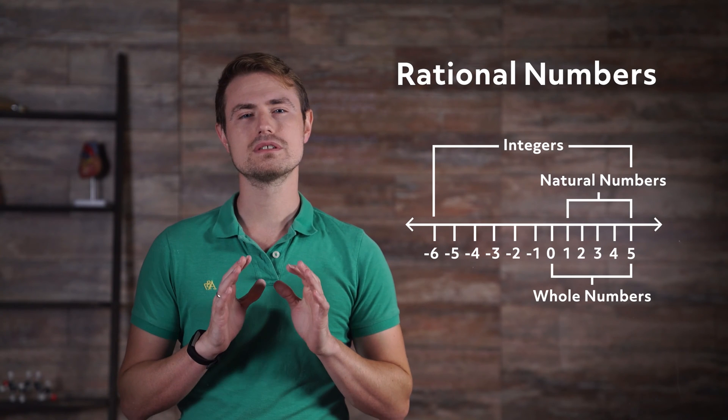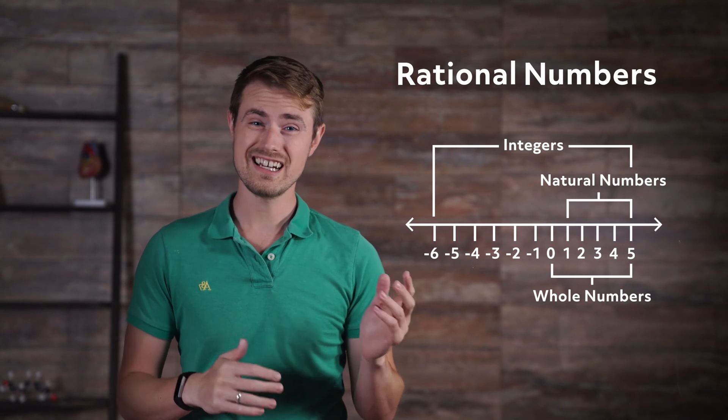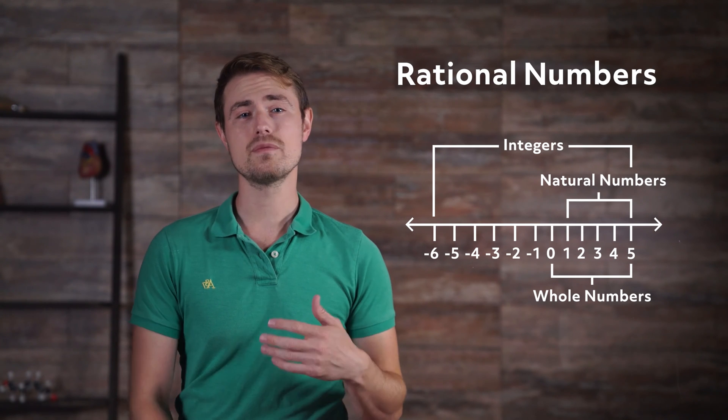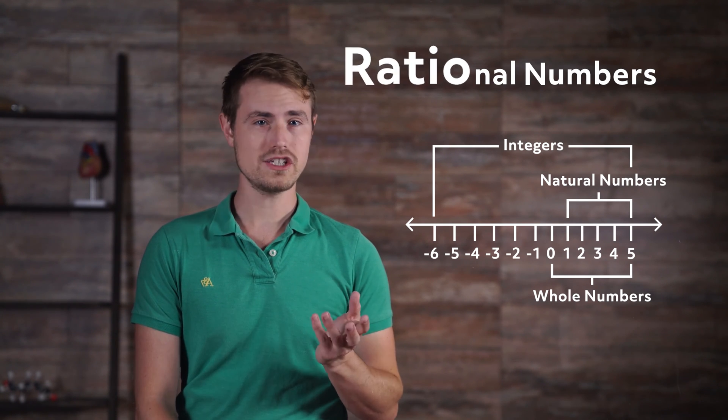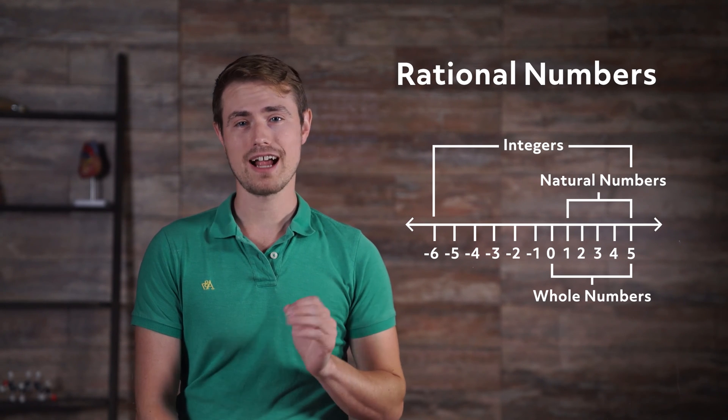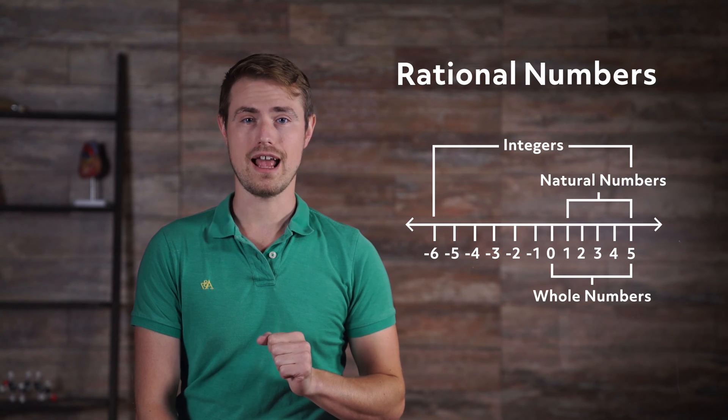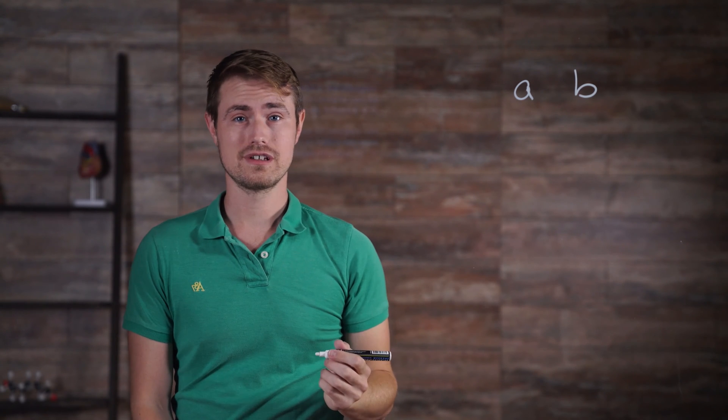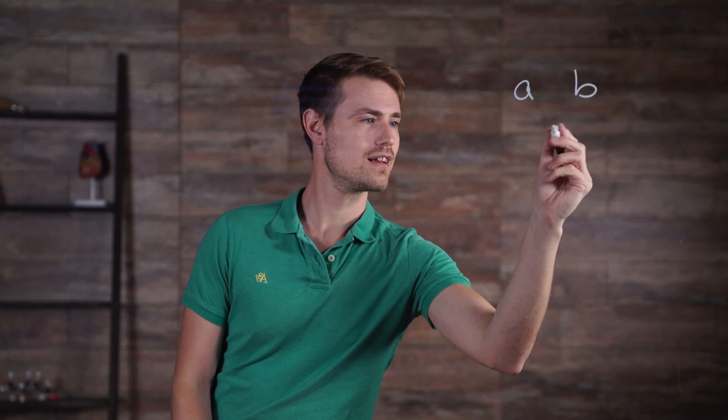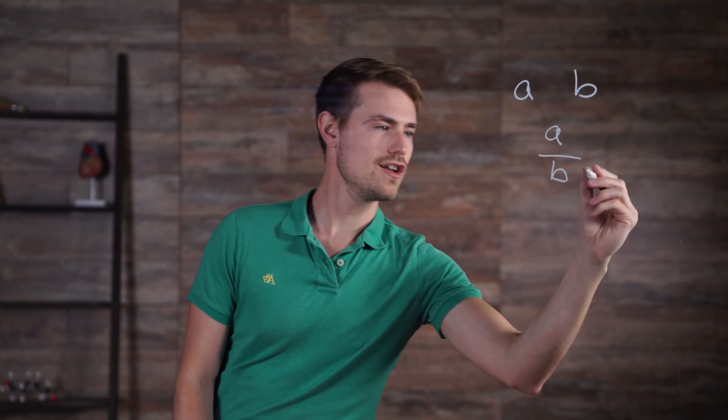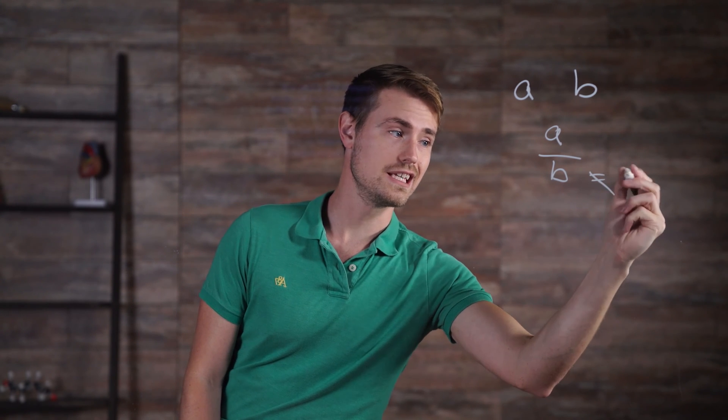Rational numbers include all the sets seen here in addition to the fractional values in between. An easy way to remember this is that the word ratio is in the name of this classification. All numbers included in the rational number set can be written as a ratio of integers. If A and B are integers, rational numbers can be written as A over B, as long as B does not equal 0.